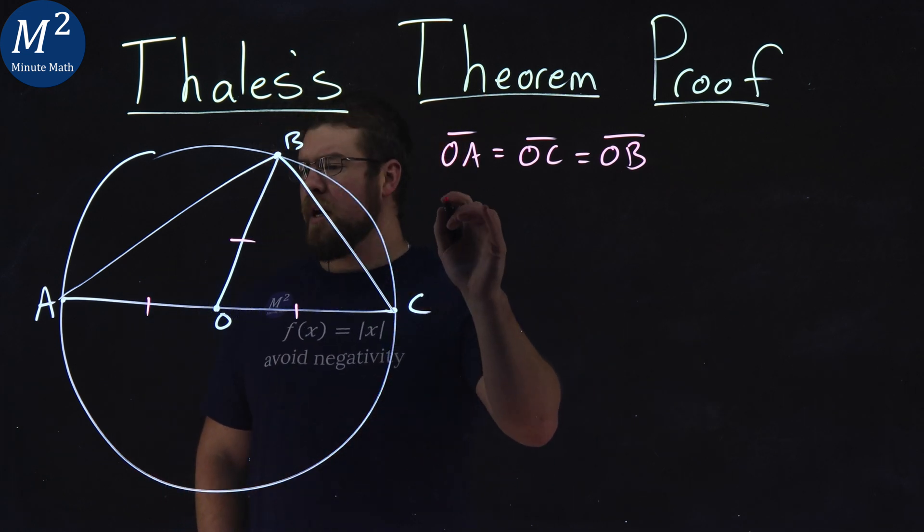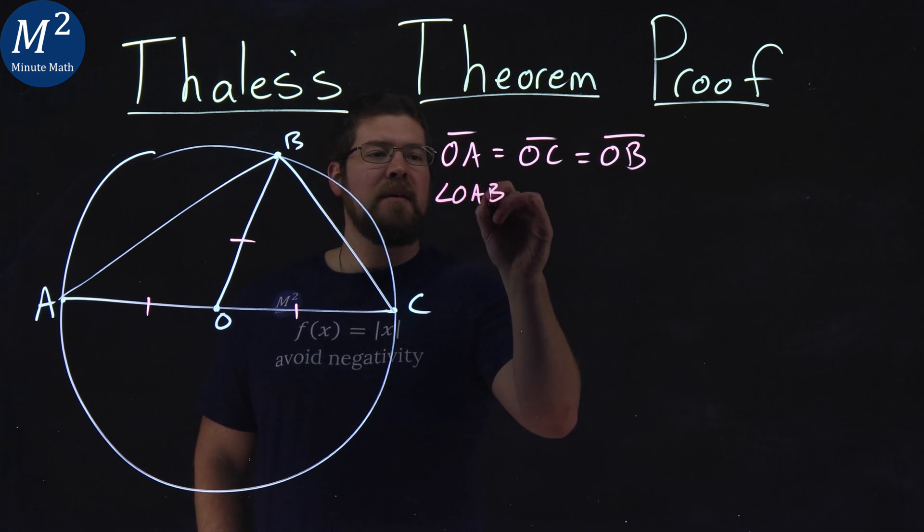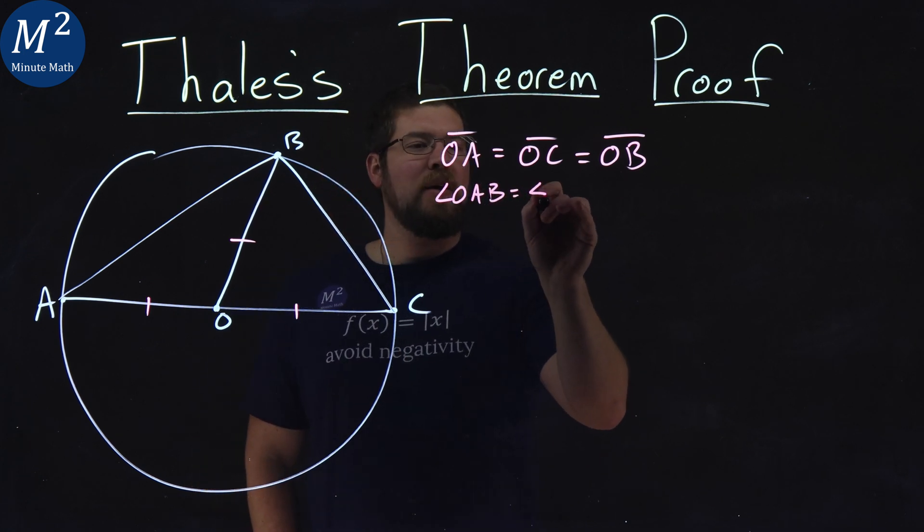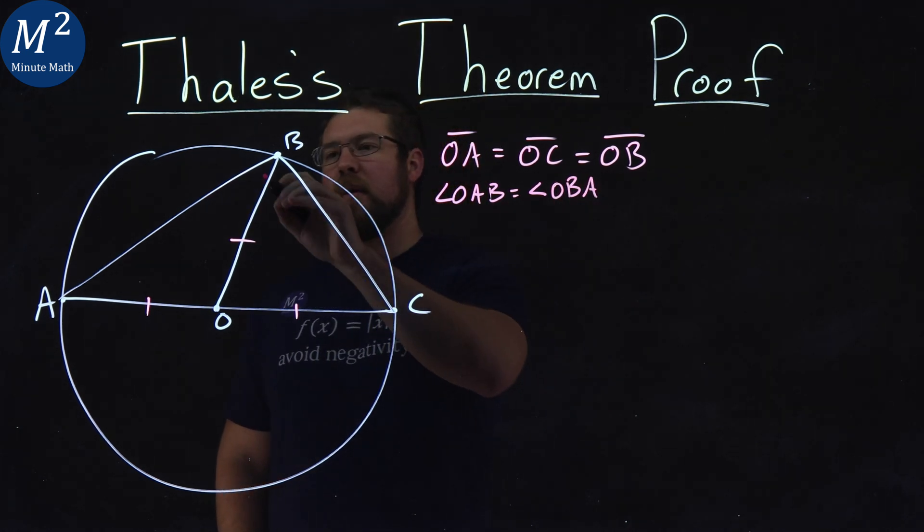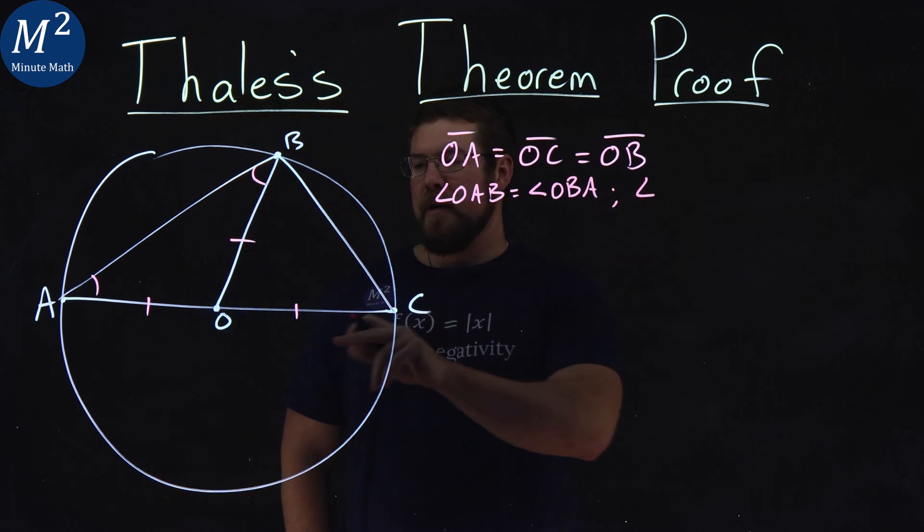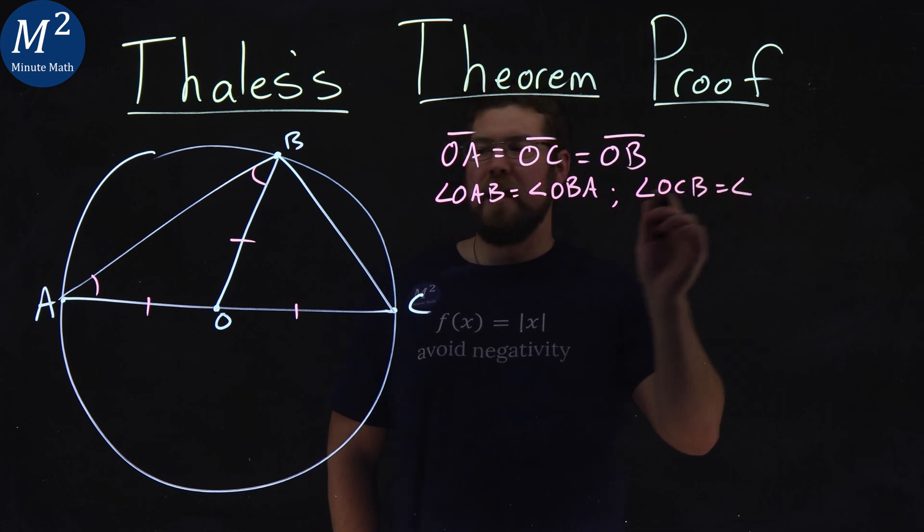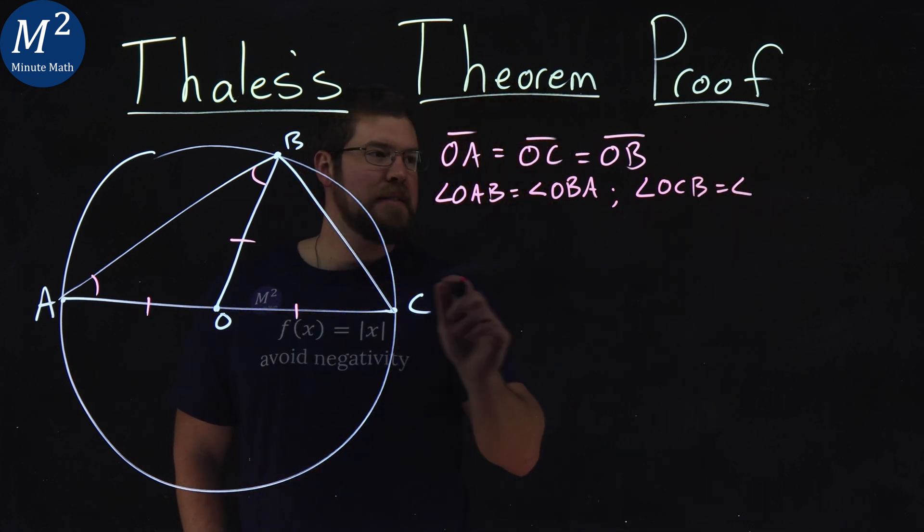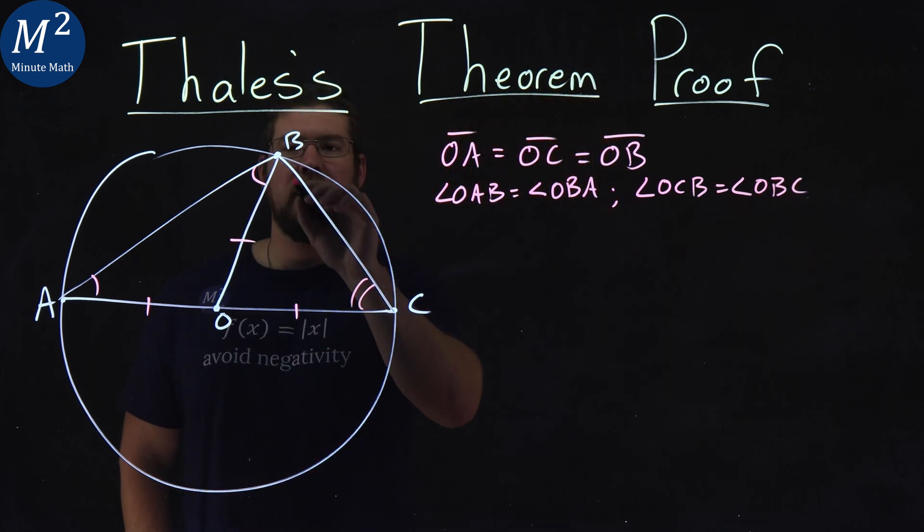So we have angle OAB is equal to angle OBA. These two angles right here. And angle OCB is equal to angle OBC. Put two arcs there.